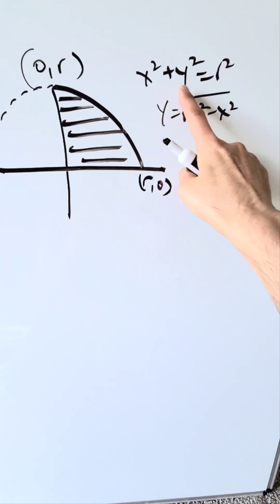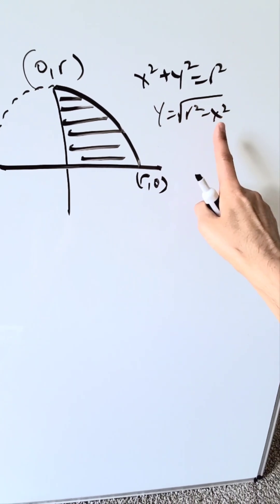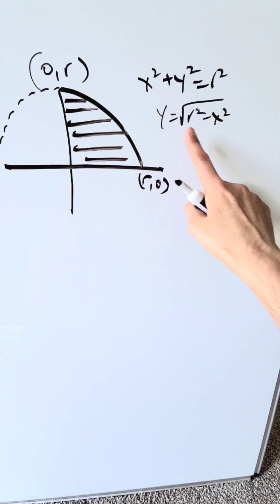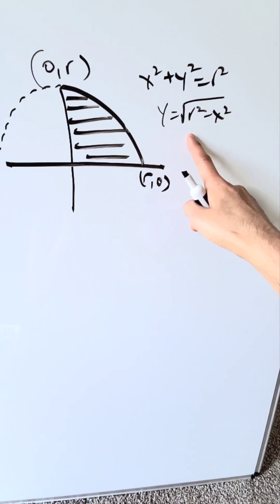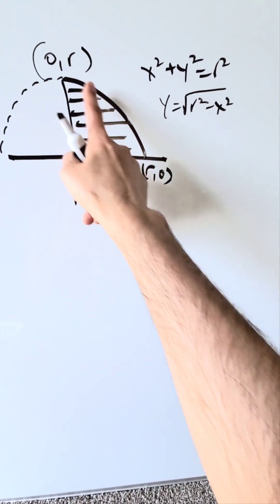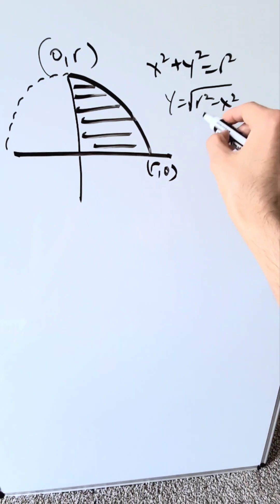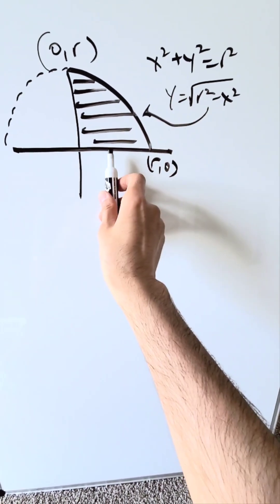If you were to start here with this equation, x squared plus y squared equals r squared, which is the equation of a unit circle, the center at the origin, you solve for y. It's equal to the root of r squared minus x squared. It represents this curve you see right here. I'm only showing you part of it, half of it.